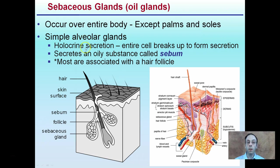These oil glands secrete an oily substance called sebum, and they're mostly associated with the hair follicles. Here's our sebum associated with that hair follicle. That image of the skin hopefully is starting to make more sense with each video that you watch.